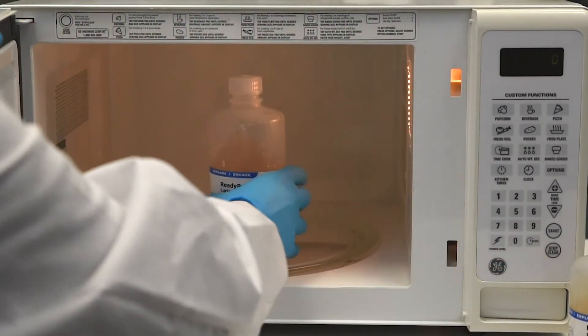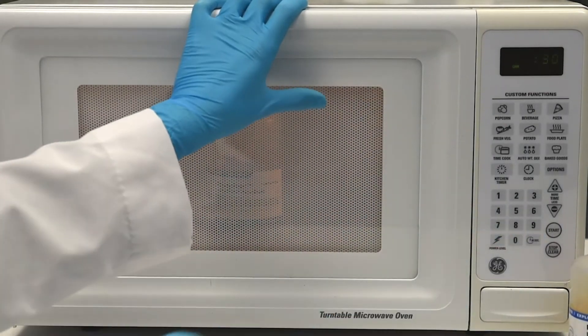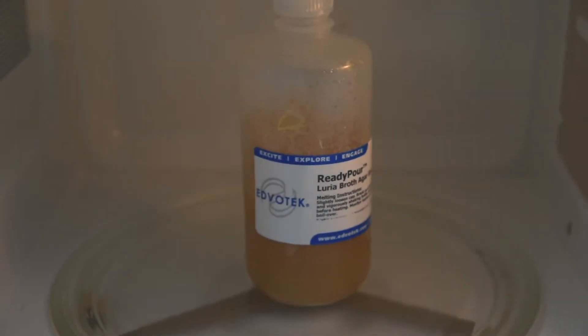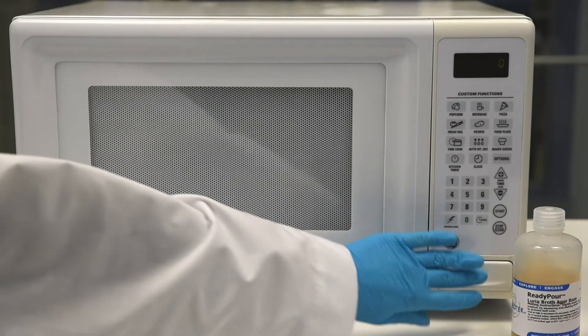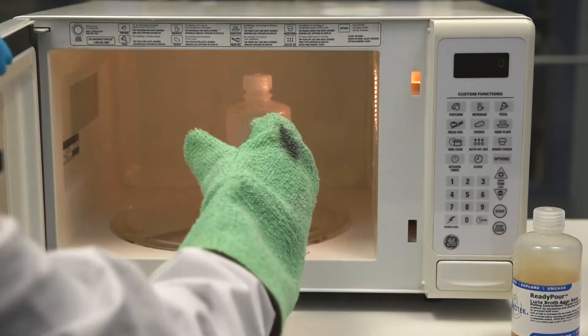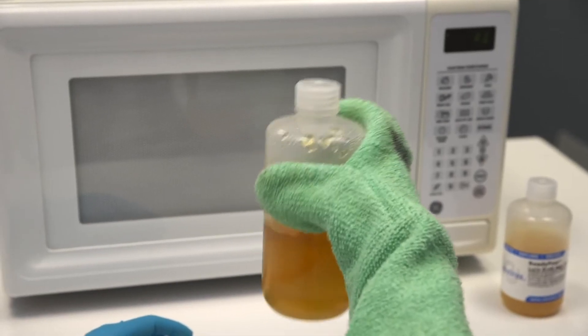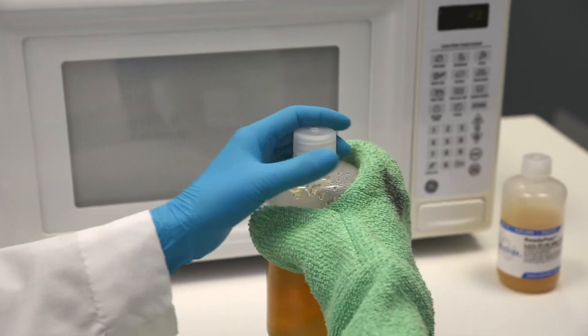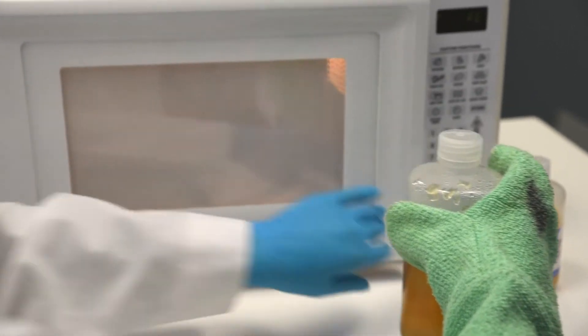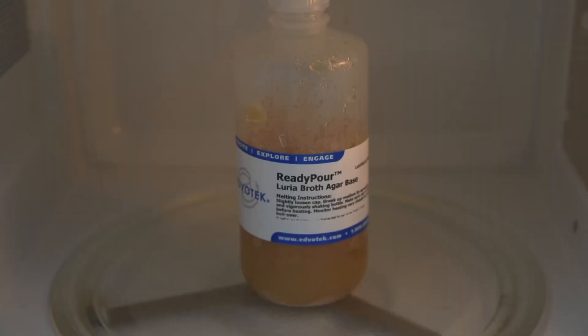Carefully remove the bottle from the microwave, retighten the cap, and mix by swirling the bottle. Loosen the cap again and continue to heat the solution in 20 to 30 second intervals until the agar is completely dissolved.